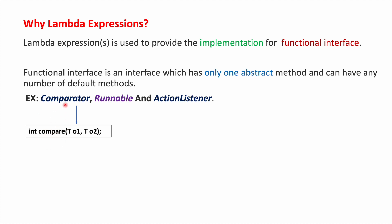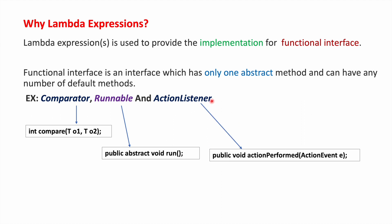Whenever we implement the Comparator interface, we have to provide implementation for the compare method. For the Runnable interface, we have to provide implementation for the run method. The ActionListener functional interface has the abstract method actionPerformed. Now we will see how we implemented Comparator and Runnable before Java 8 and after Java 8 lambda expressions.